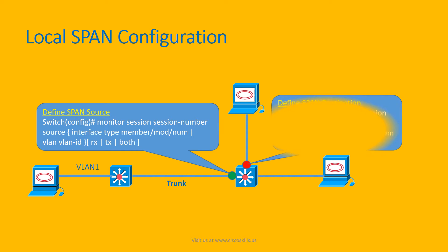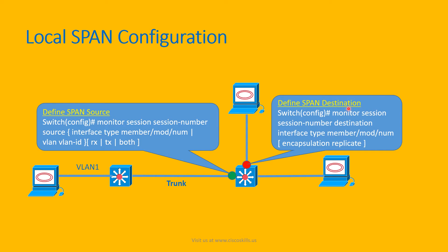Next, you need to define the SPAN destination. The command is also entered at global configuration mode: monitor session [session-number] destination interface [interface]. By default, Layer 2 protocol packets such as Spanning Tree, CDP, or VTP are not captured. To capture those packets, you need to enter the command encapsulation replicate.